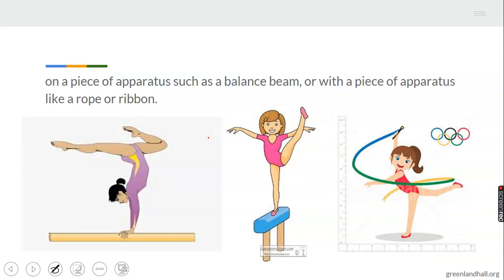They can do this on a piece of apparatus such as the balance beam or other pieces of apparatus like a rope or ribbon like what we are seeing here. They actually perform this in the Olympics, it's a sport.